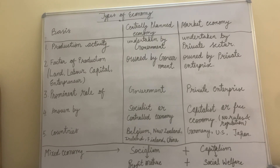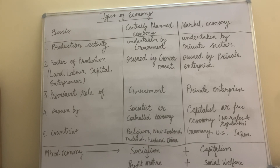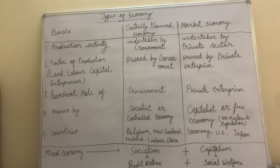Fourth point: what other names can we use for a centrally planned economy? It is also called a socialist economy or command/control economy. Questions may come using those names instead of 'centrally planned economy.' Socialist means the government looks after everyone's welfare — every individual's wellbeing. Control means everything is in the government's hands — it is centrally controlled.